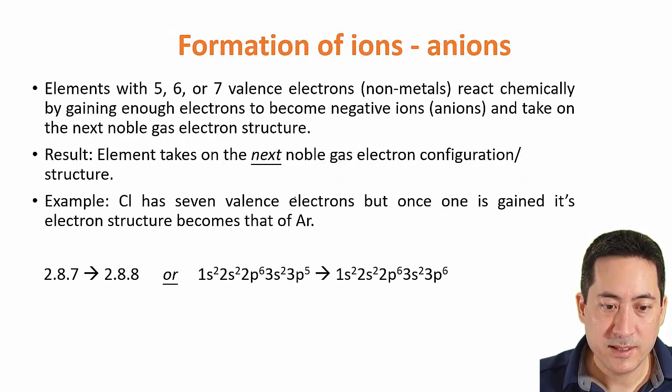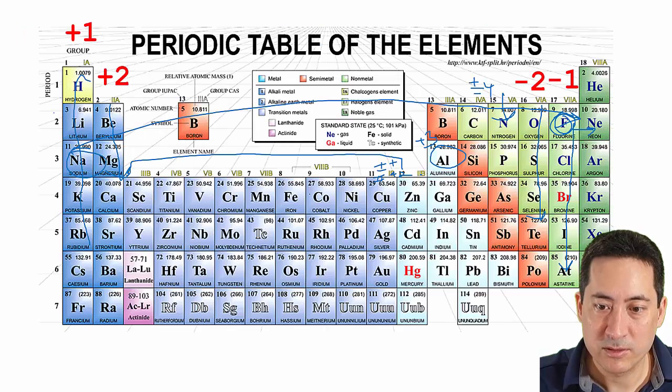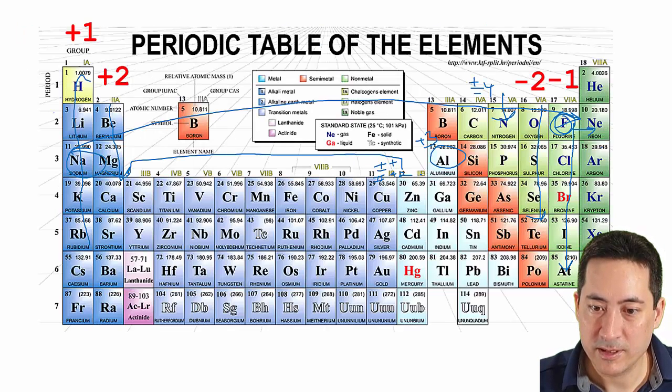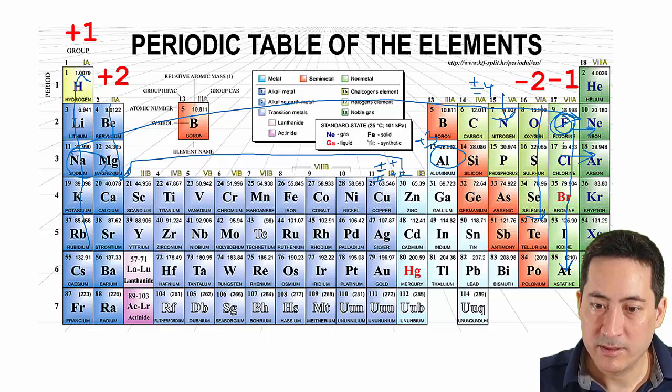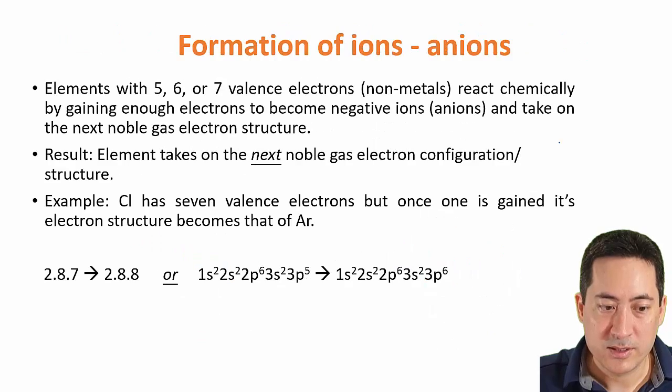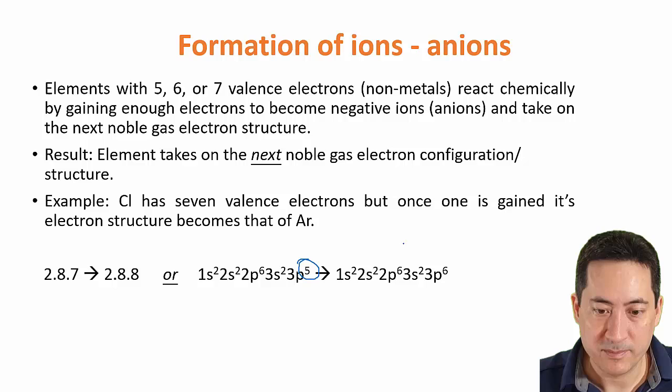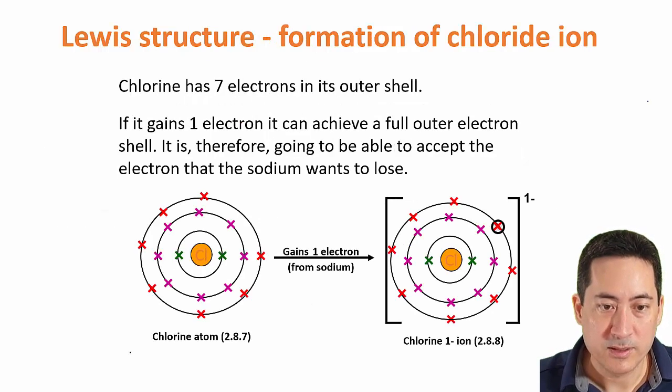That's just a summary there of the most common cations. You can suss that out from the periodic table. Moving to anions now, they're the opposite. They want to gain an electron to have a full shell. So that one is chlorine. Chlorine is going to gain one electron to become argon. It's going to have one extra electron, so it'll be negative.